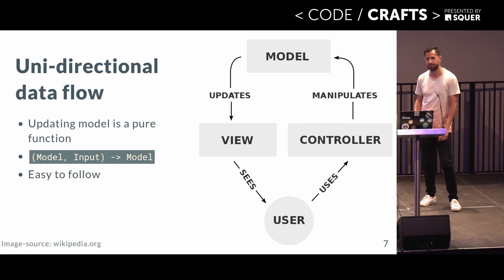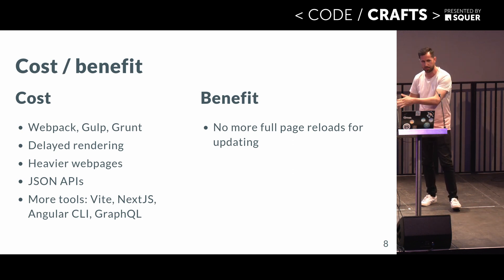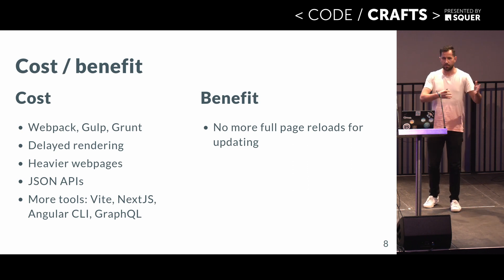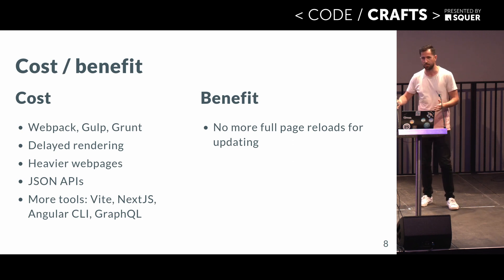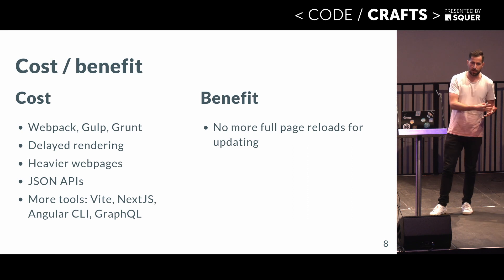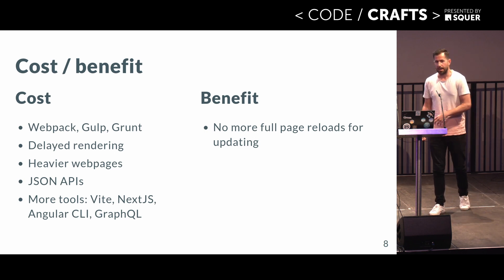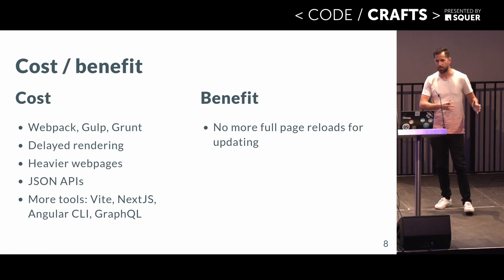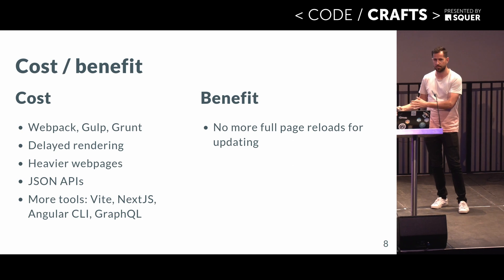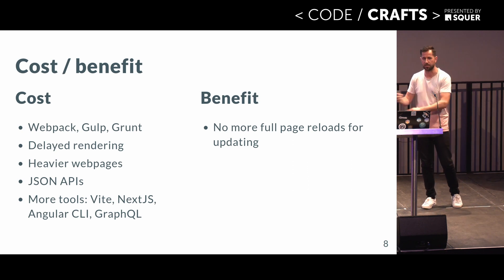The question is, at what cost did we get that interactivity? We needed to build tools like Webpack, Gulp, Grunt. We had delayed rendering because now we had to ship all of that JavaScript to the frontend — all of the bytes had to be transferred. Then the application by itself can't show any data, so we had to go and build JSON APIs to actually get the data to the frontend. We had heavier web pages, more download of data. So we built more tools: Webpack was abstracted away by Vite, all that data fetching was abstracted away by Next.js, JSON APIs became boring so we built GraphQL. Those are all costs we incurred for the benefit of no more full page reloads. The why is we want partial updates to our web page, not full round trips.